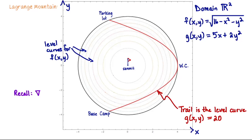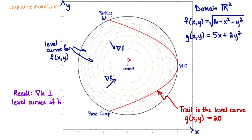All x, y values from the same circle get mapped to the same mountain elevation, and the trail is the level curve g of x, y equals 20 — because our trail follows 5x plus 2y squared equal 20. We know that the gradient of a function is perpendicular to its level curves. If I pick any point on this topographic map and compute the gradient of f, it's perpendicular to the level curve at that point, pointing up the mountain — in the direction of greatest increase, toward the summit. Here are some sample gradients of f, sketched perpendicular to the level curves.